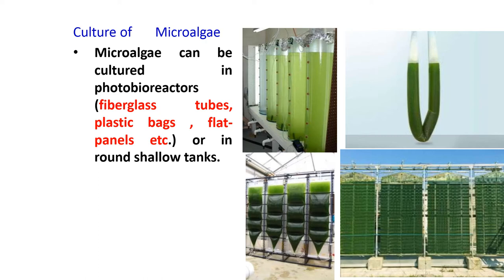Different types of medium are used for different types of algae. For example, BG11 medium is used for the growth of Chlorophyceae members. Bold Basal Medium is used for the cultivation of freshwater algae. ASN3 medium and CHU2 medium are used for the cultivation of marine cyanobacteria.